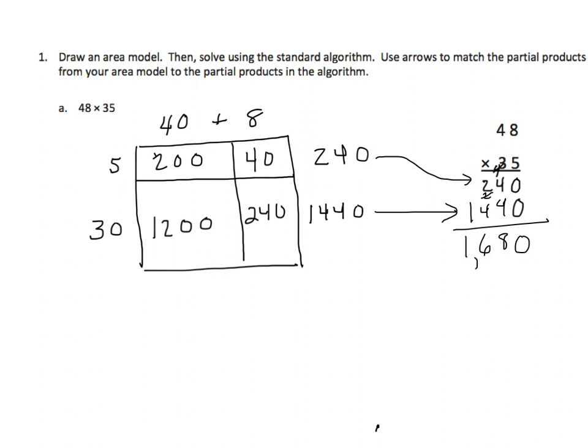So the answer is 1,680. Let's do another example to make sure that you have this down. You'll have 2 like this on the homework, and then you're going to do a few problems just using the standard algorithm. Alright. Once again, this one's even more complex because we have not a 2-digit by 2-digit problem, but we have a 3-digit by 2-digit.